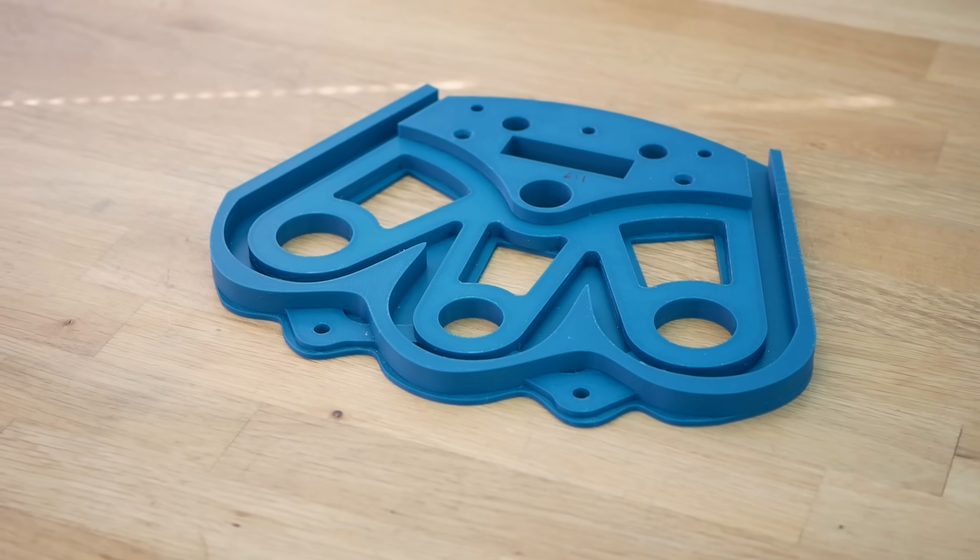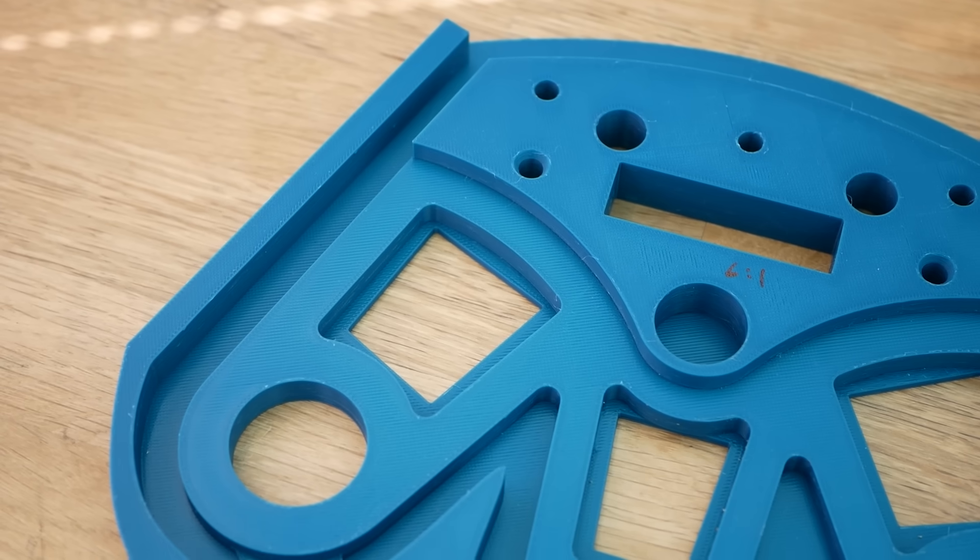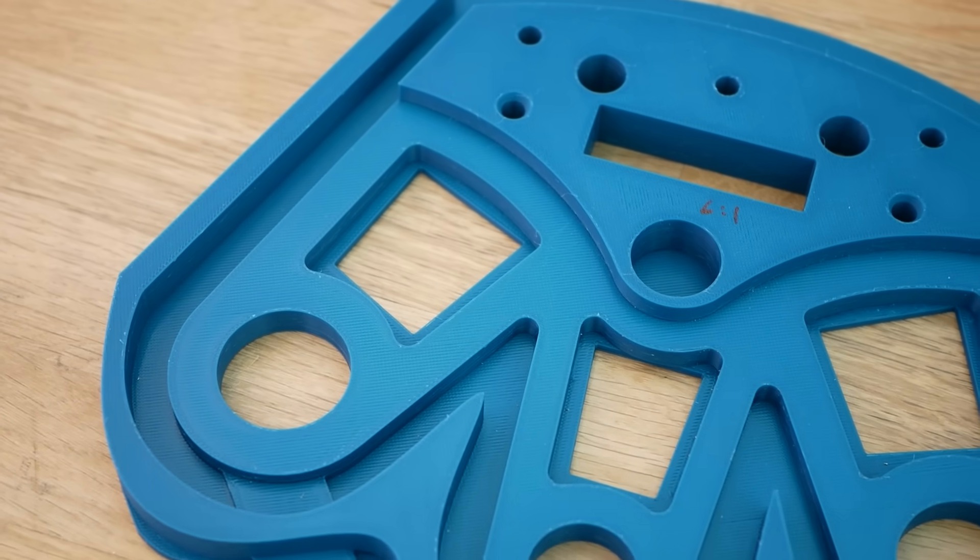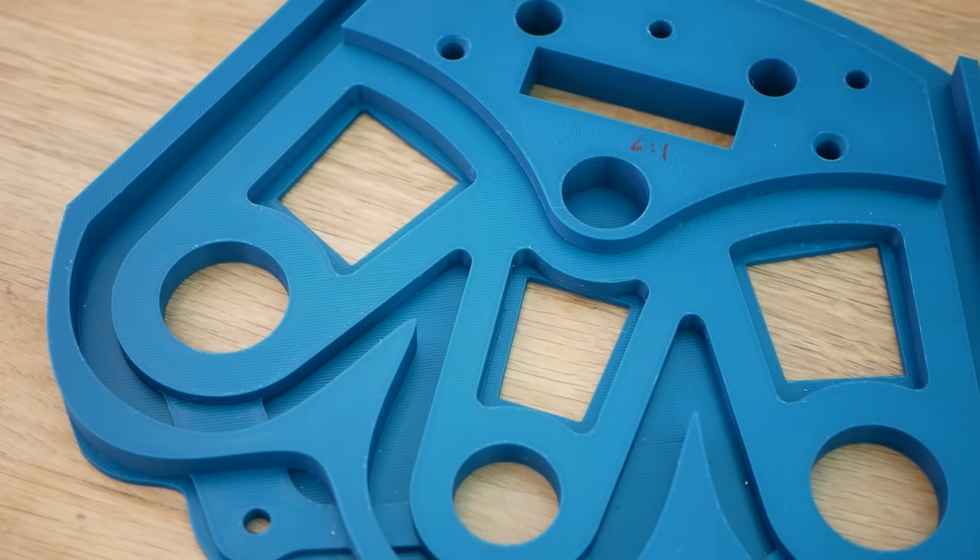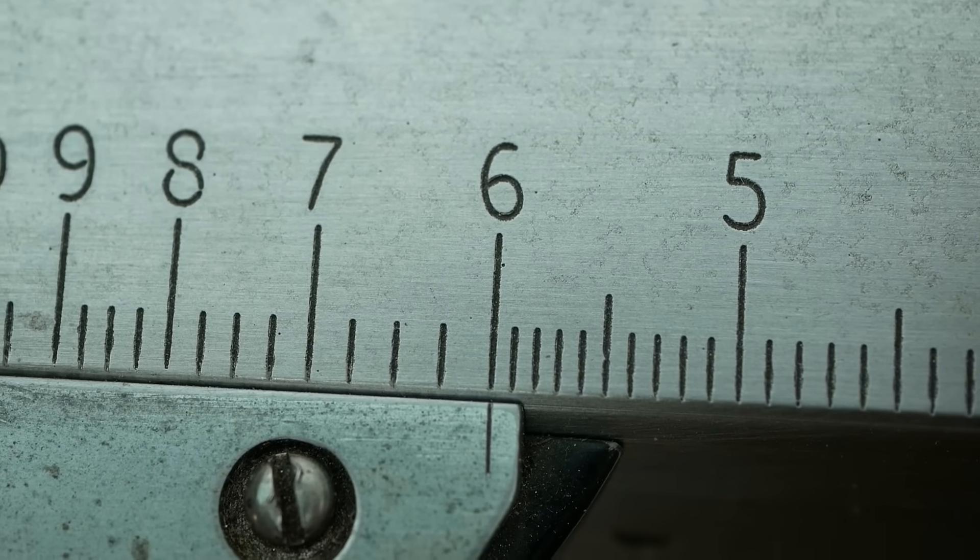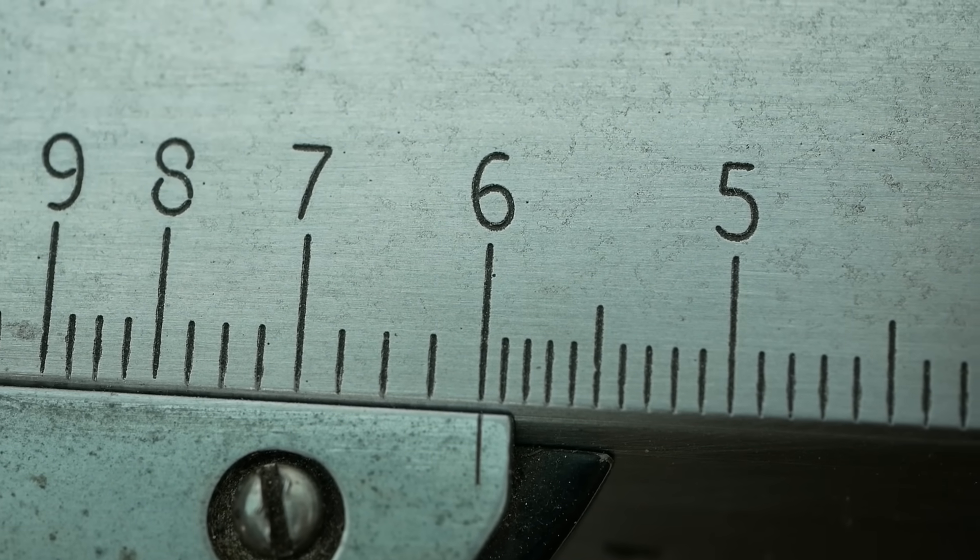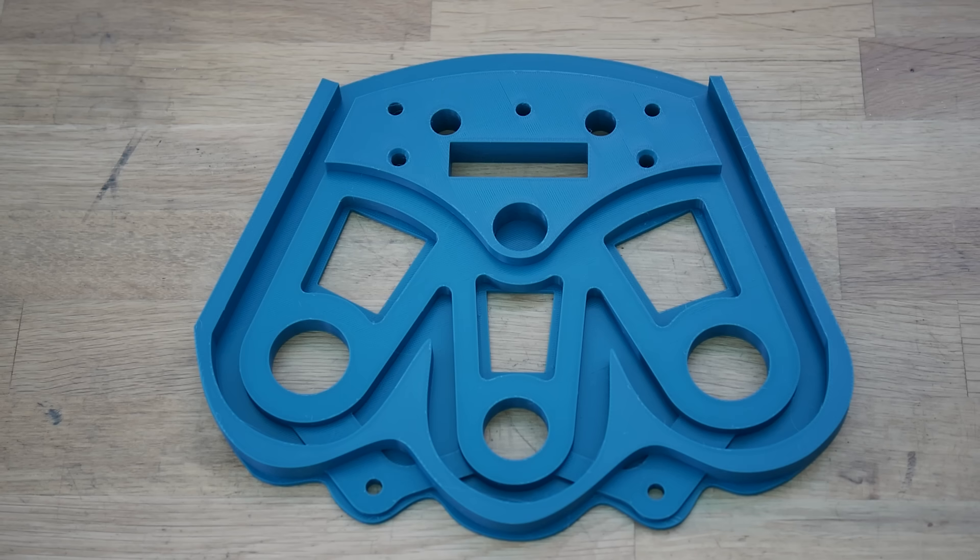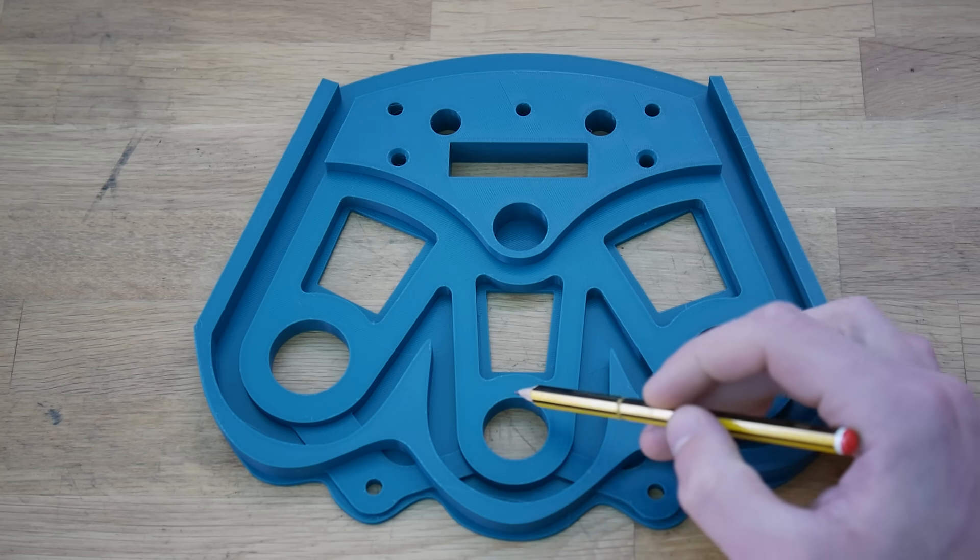I 3D print my templates from PLA, and I usually try to use the largest scale ratio I can. This is usually around 10 to 1, but in this case, the template is 6 times bigger than the final component. The holes you see here need to be precisely sized in the final part, and although the pantograph can give surprisingly accurate results, I prefer to play it safe and machine these undersized to be finished later.